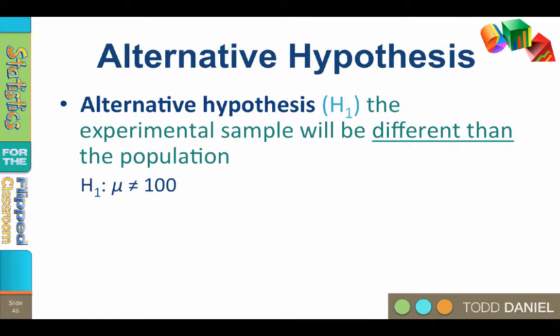The alternative hypothesis states that the experimental sample will be different than the population. The experimental test mean was so different from the control or population mean that the test mean more likely represents a different population, one with a different mean.